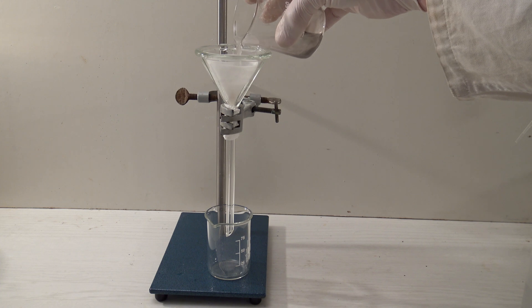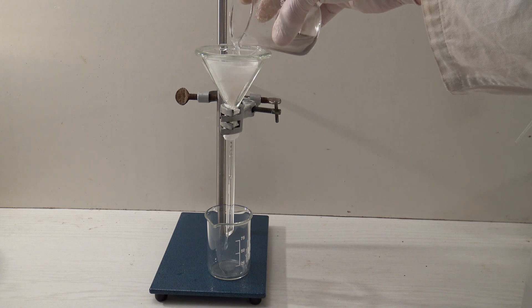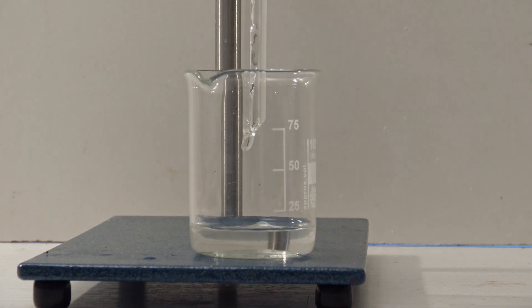After cooling down, the solution was filtered off. The filtrate is called soda extract and contains all the anions of the sample. For obvious reasons, this can't be used anymore to test for carbonates.